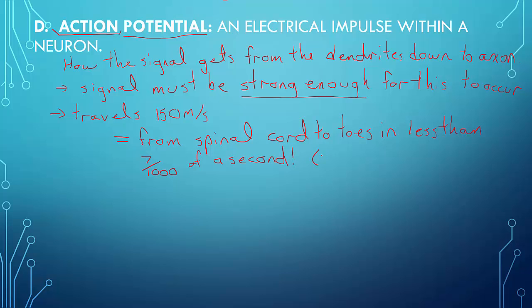The way that this occurs and how this action potential works is that it is caused by a wave of sodium that enters the cell very quickly, followed by potassium leaving.